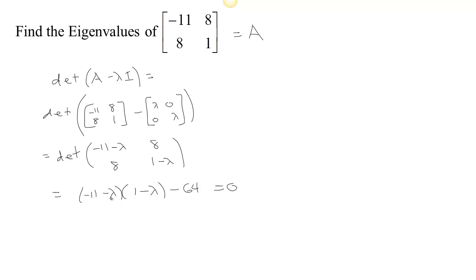If I multiply this out, there's a negative lambda times negative lambda, so that's lambda squared. We've got a plus 11 lambda and a minus lambda, so that's plus 10 lambda, and then we've got negative 11 times 1, that's minus 11, and minus 64 equal to 0.